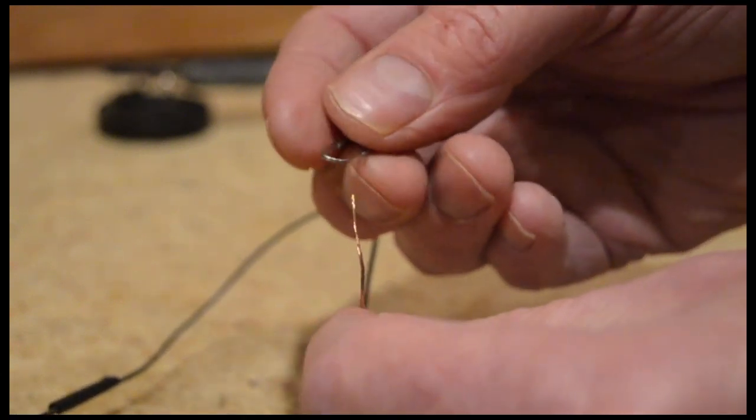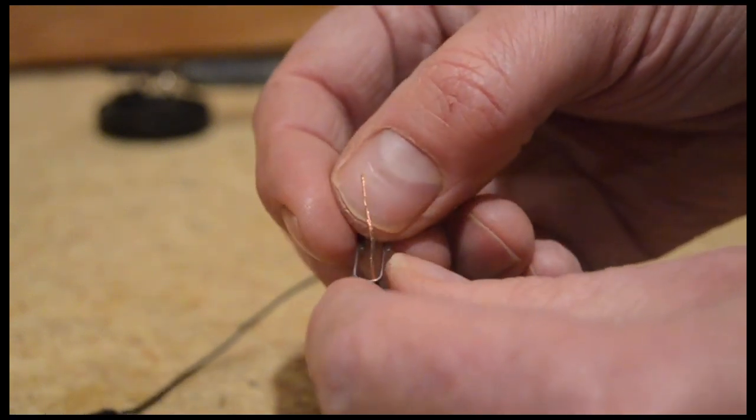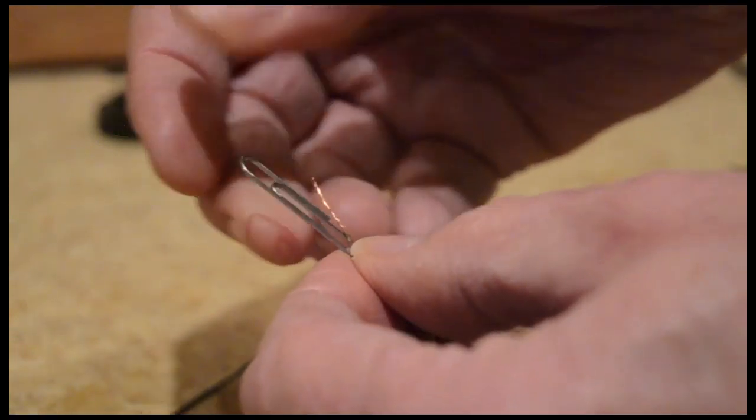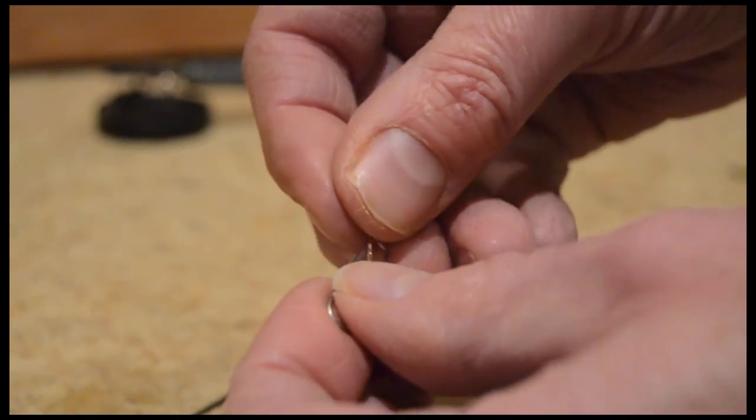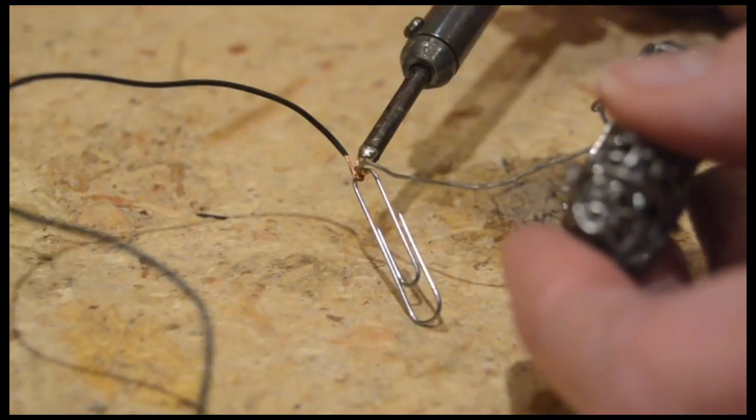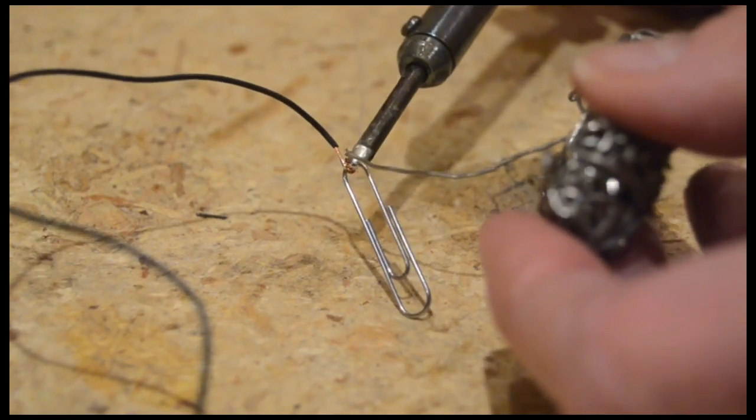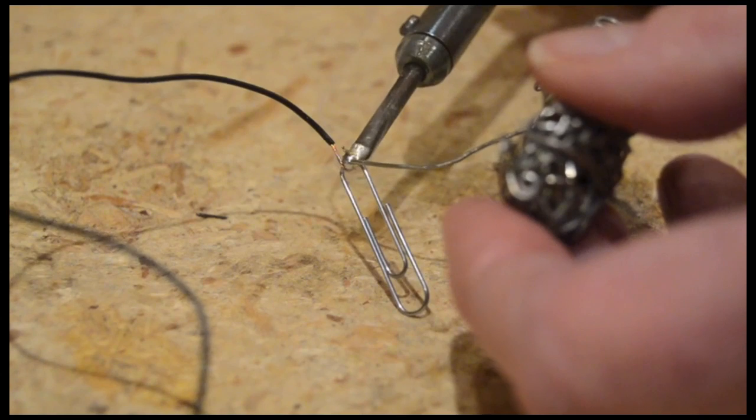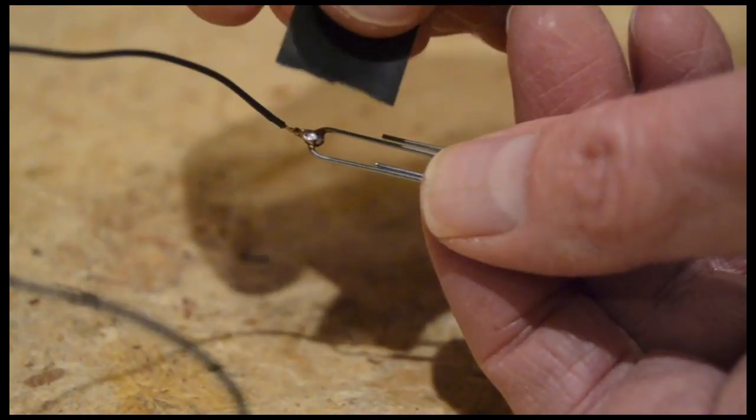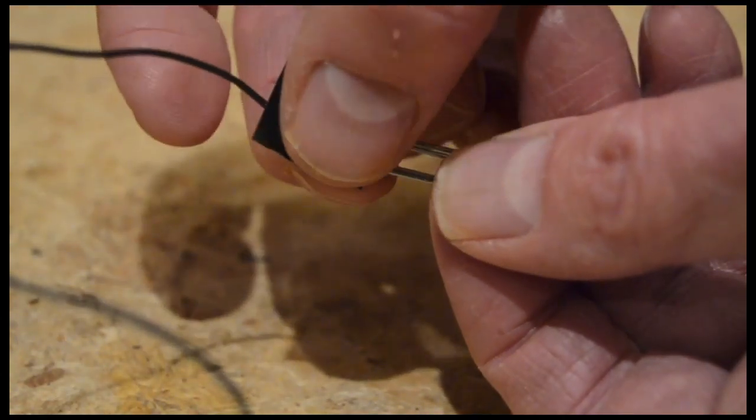Wrap the end of the connected wire around the small end of a paper clip. Then solder the connection. Soldering is optional, but will make a stronger connection. Wrap the connection with electrical tape.